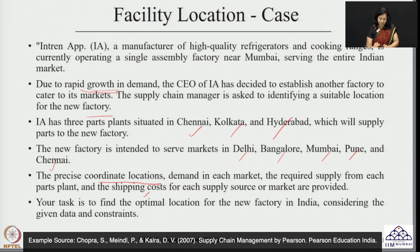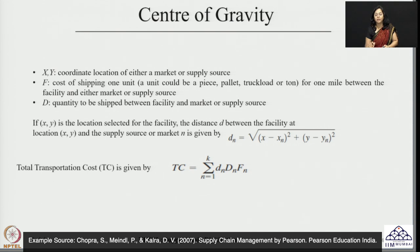The task is to find out the optimal location — this is very important. We have to find the optimal location for the new factory in India considering the above data and constraints related to supply, demand, and so on. This problem can be solved through a simple approach called the centre of gravity approach, which is based on the coordinate location information of the given facilities and considering the demand and distances between them.